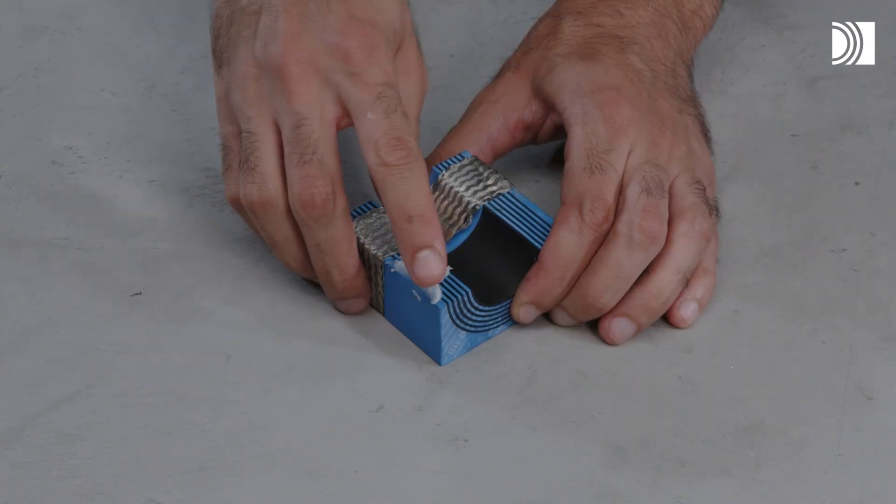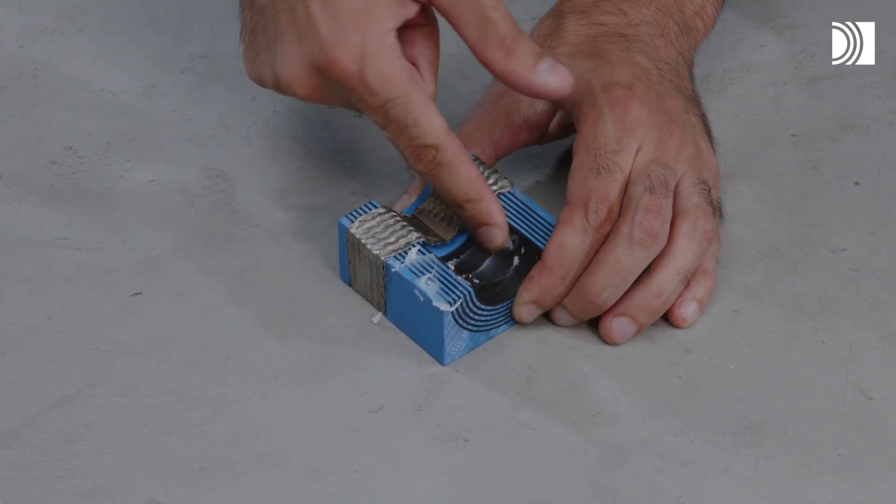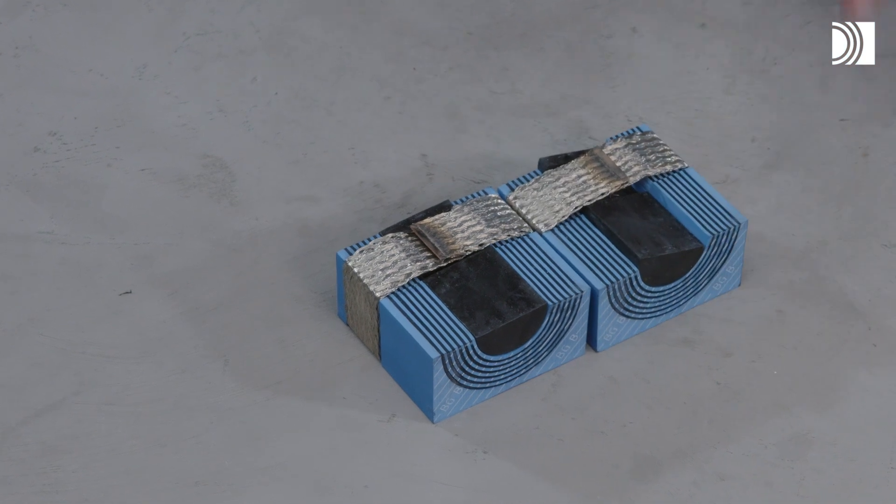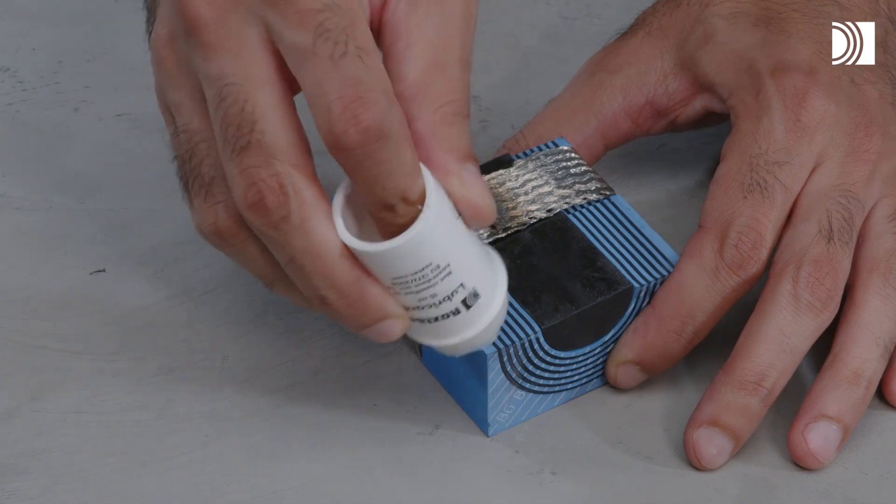Lubricate the sealing surfaces of all modules. Avoid excess lubricant on the braid. Lubricate the sealing surfaces of the spare modules. Do not remove the core. Lubricate the sealing surfaces of any solid modules.